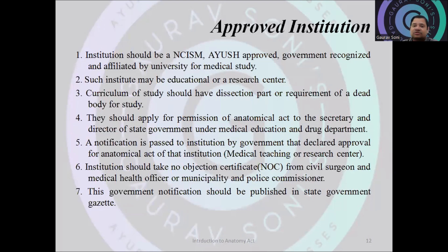An approved institution must have NCISM or Ayurveda council approval, be government recognized, and be affiliated to a university for medical study. The institution may be an educational or research center, and its curriculum must clearly mention the requirement of dead body dissection. Permission under the Anatomy Act must be obtained from the state, then directed through the state health department and medical education authority. An NOC is ultimately provided to the institute by the civil surgeon or medical health officer, after which the institute can procure unclaimed bodies.